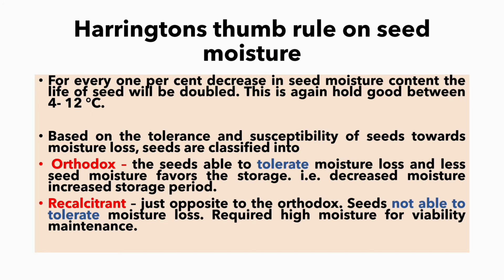Based on the tolerance and susceptibility of seeds towards moisture loss, seeds are classified into orthodox and recalcitrant. Orthodox seeds are able to tolerate moisture loss and less seed moisture favors storage. Just opposite to orthodox is recalcitrant — seeds that are not able to tolerate moisture loss and require high moisture for viability maintenance.